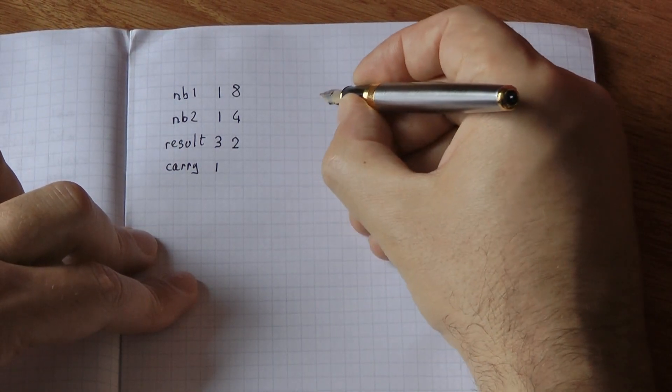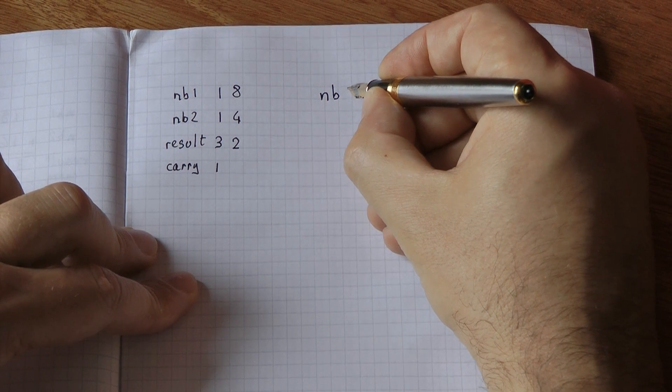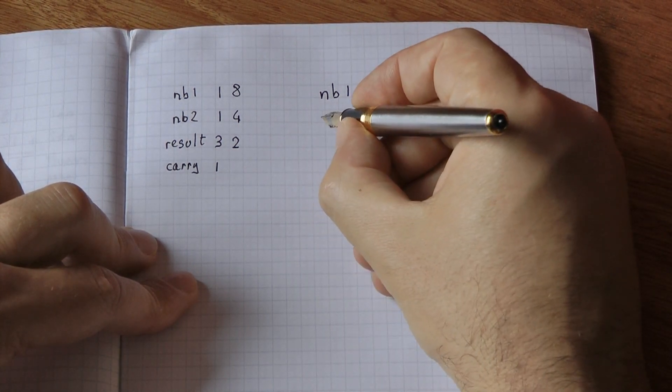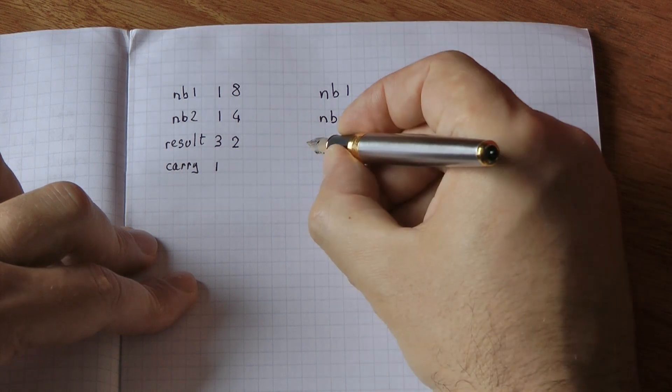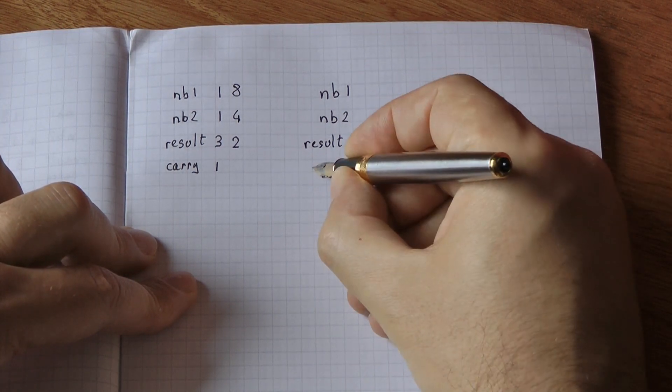And we're going to do exactly the same thing when adding two binary numbers. I'm going to have the first number, the second number, I'll have my results. And if needed,